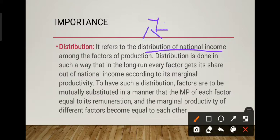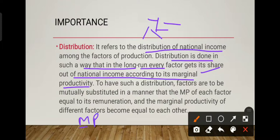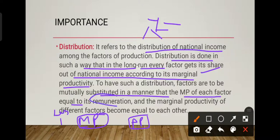Next point is distribution. It refers to distribution of national income. To have such distribution, factors will be mutually substituted so that the marginal productivity of each factor equals its remuneration, and the marginal productivity of different factors become equal to each other.